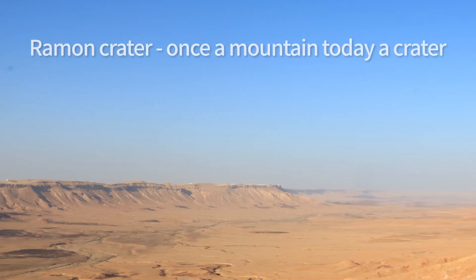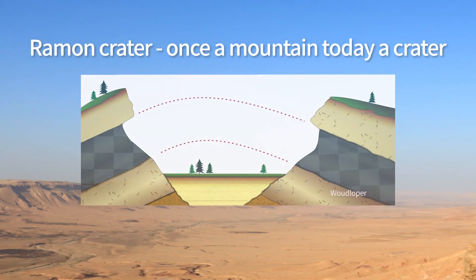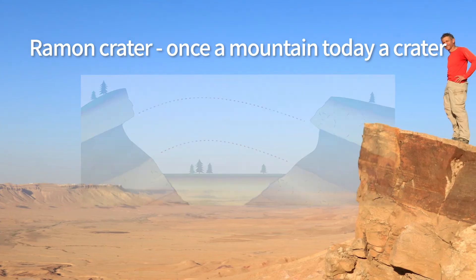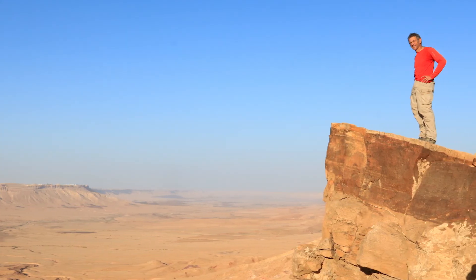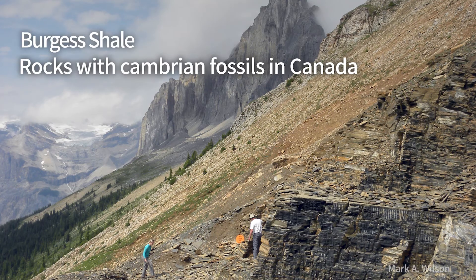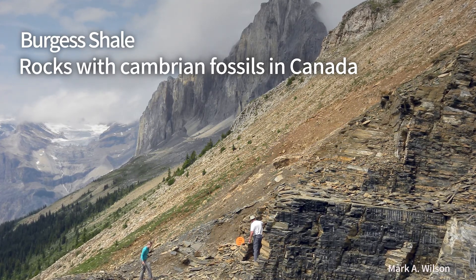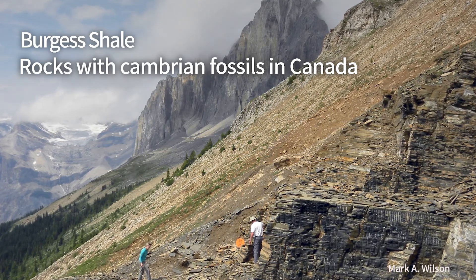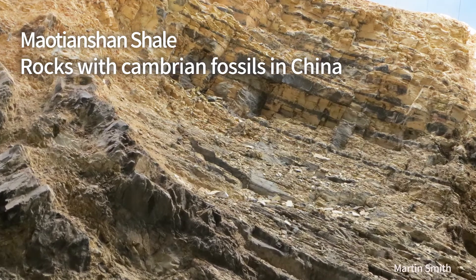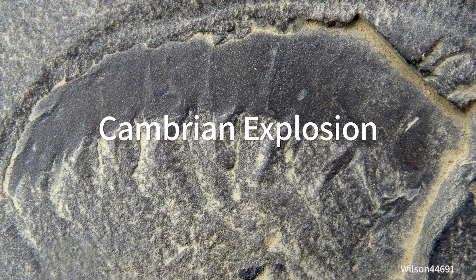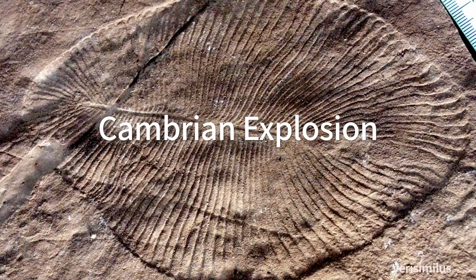Mountains and rocks are constantly eroded. Therefore, the further back we go, the scarcer the fossils become. Nevertheless, in China and in Canada, 500 million year old fossils were found. From these fossils, we learned about the rapid development of complex animals that took place at about this time. This is called the Cambrian Explosion, that took place in the geological period called Cambrian.